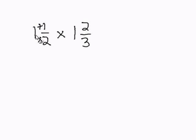2 times 1 is 2, plus 1 is 3. 3 becomes our numerator, and the denominator remains the same.